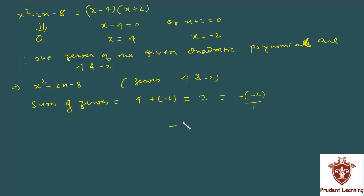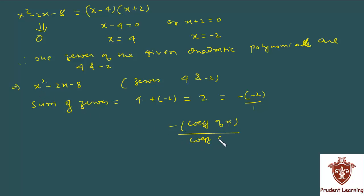Minus 2 kya hai? Woh x ka coefficient hai, aap dekh sakte hain. Toh yahan likhenge: −(coefficient of x) / 1 — jahan 1 aapka x² ka coefficient hai — that is, upon coefficient of x². Toh aap dekh sakte hain: sum of zeros = −(coefficient of x) / (coefficient of x²).